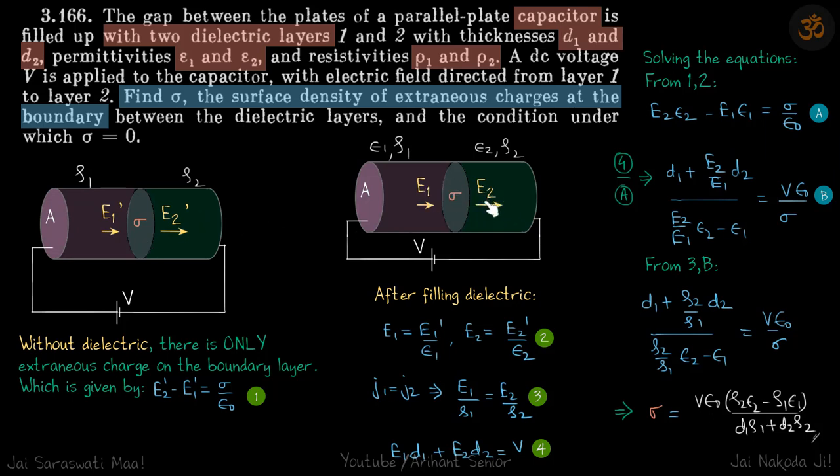Now, we want to get rid of E1 and E2. For that we will make use of the current densities. J1 is equal to J2 that gives E1 by rho1 is equal to E2 by rho2.